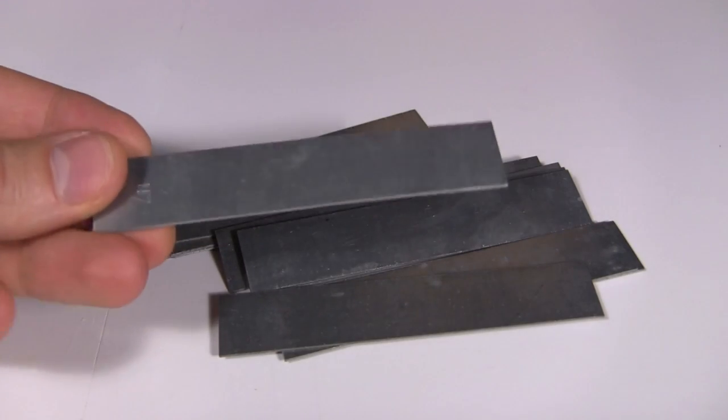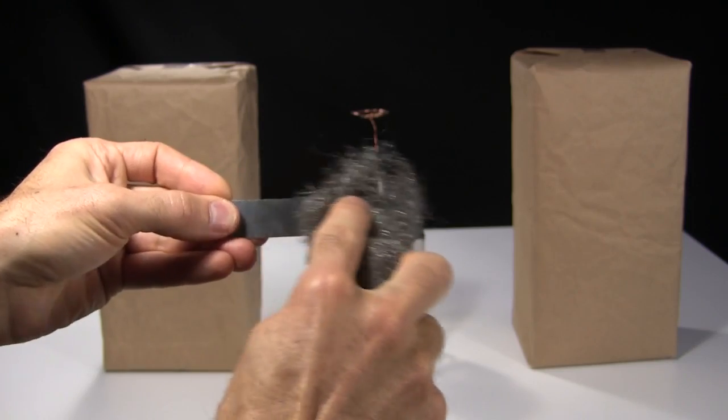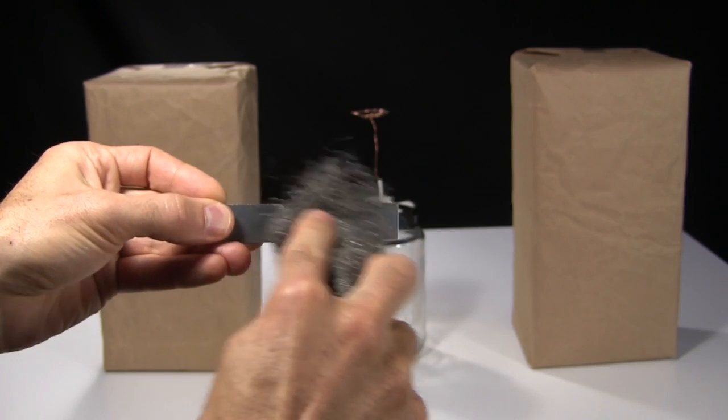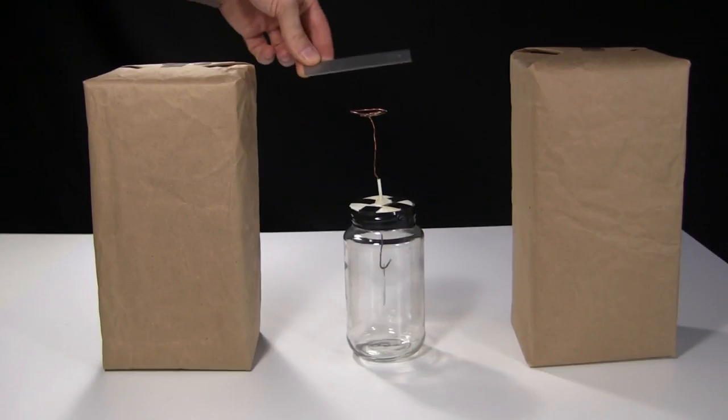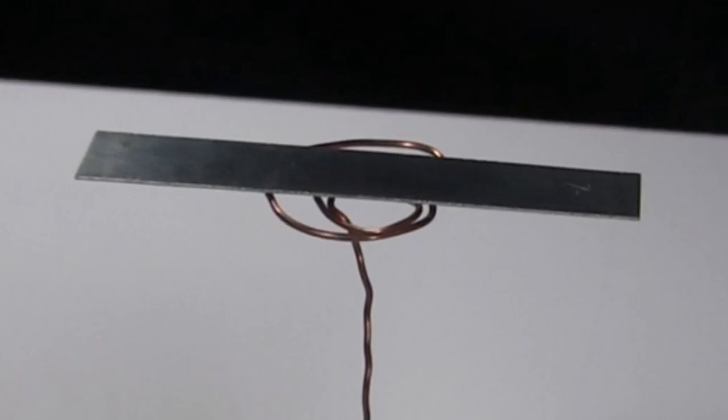I bought some zinc from an online science store. Just search for zinc metal electrode. Clean the oxide layer off the zinc using some steel wool or fine sandpaper. Place the zinc on top such that it's in electrical contact with the electroscope's terminal.